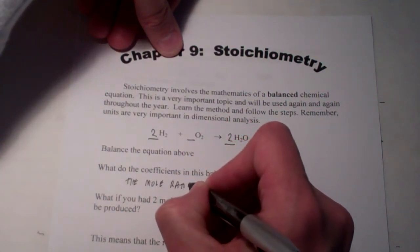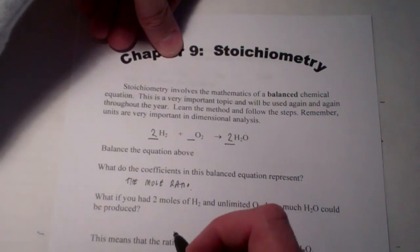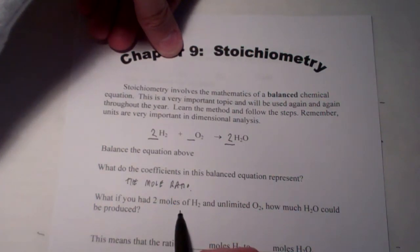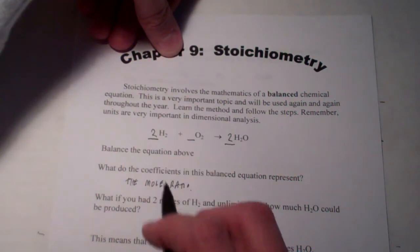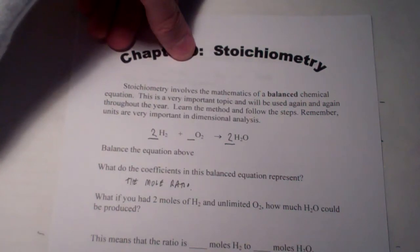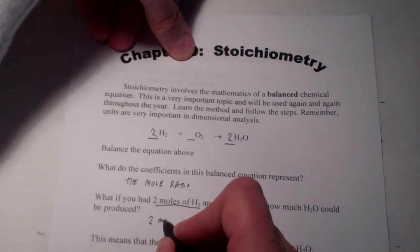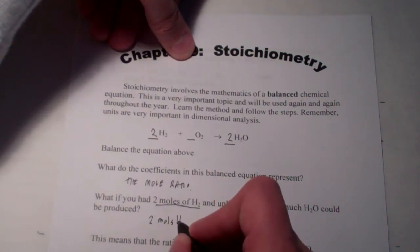Now, there's that word mole. We use that a lot this year, and it's going to pop up again in Chapter 9. Let's take a look at this. If I had 2 moles of hydrogen, 2 moles of hydrogen, and unlimited oxygen, how much water could be produced? We'll do our dimensional analysis. We'll start with what we know. 2 moles of hydrogen.